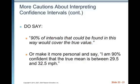So what should you say? Here's what you want to say: '90% of intervals that could be found in this way would cover the true value.' Or put it in context: 'I am 90% confident that the true mean is between 29 and 32.5 miles per hour.'